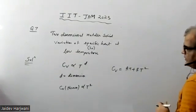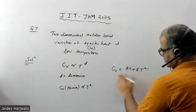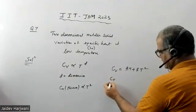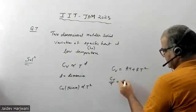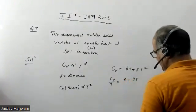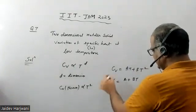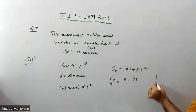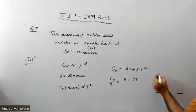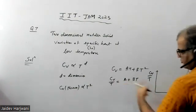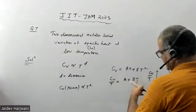If we want to study variations, the question plots CV/T versus T. So CV/T = A + BT, which is of the form y = mx + c — a linear equation. Plotting CV/T versus T gives a straight line.